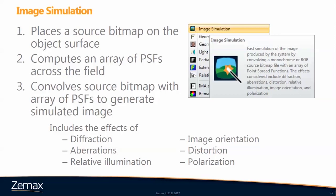The first tool in that group is image simulation — a very commonly used tool for simulating imaging performance of your sequential system. It can be difficult to set up, so I wanted to spend a good chunk of this webinar explaining how you set it up. The way image simulation works involves three steps: you place a source bitmap at the object surface, Optics Studio computes an array of point spread functions across the full field, then convolves the source bitmap with that calculated array of PSFs to give you the simulated image.